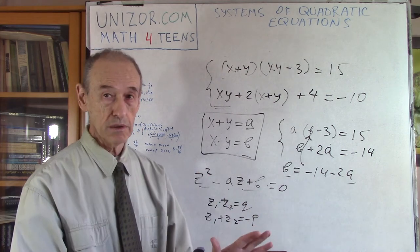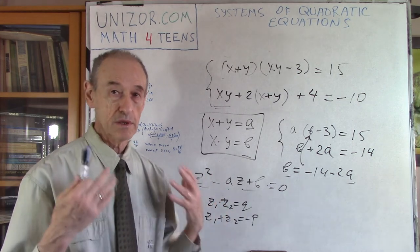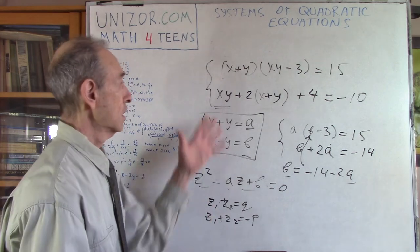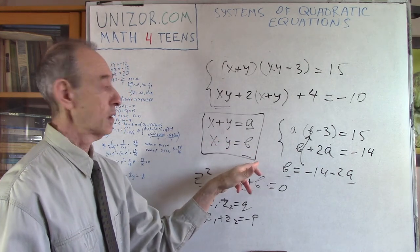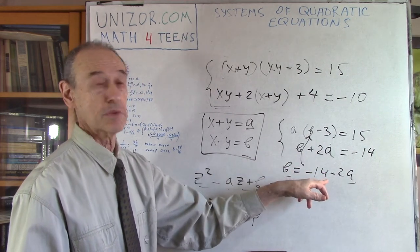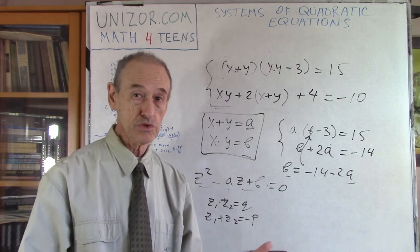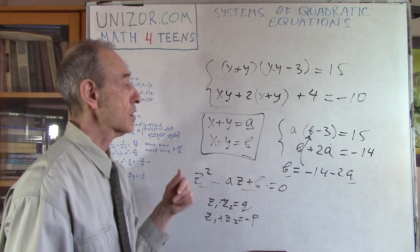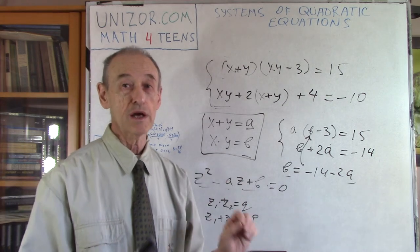So knowing A and B, I can basically construct an equation which is Z squared minus AZ plus B. Solve this equation, and its solution would be X and Y. Now, in every case on this way, you will have multiple solutions because you have quadratic equation here, quadratic equation here, and you always have to consider both roots.